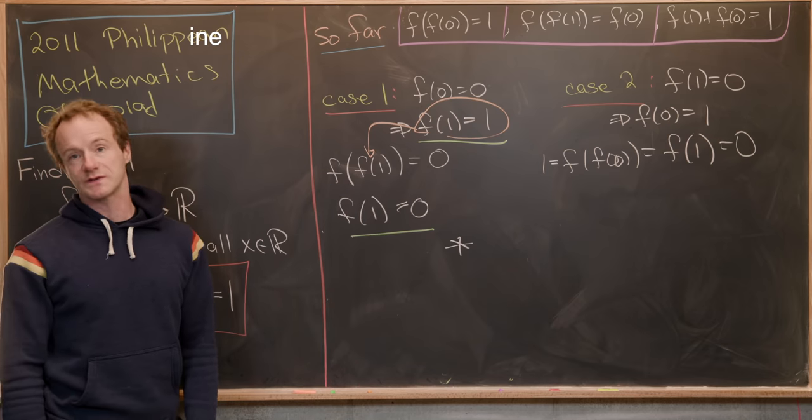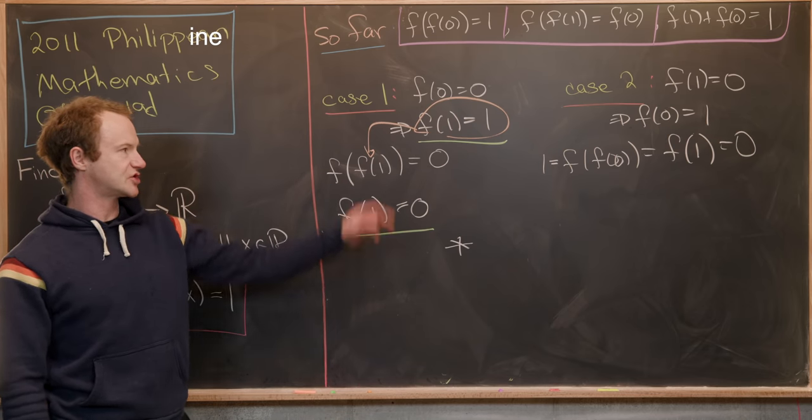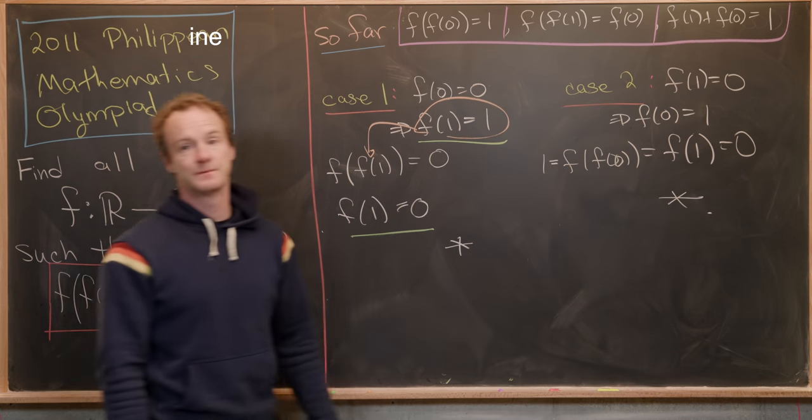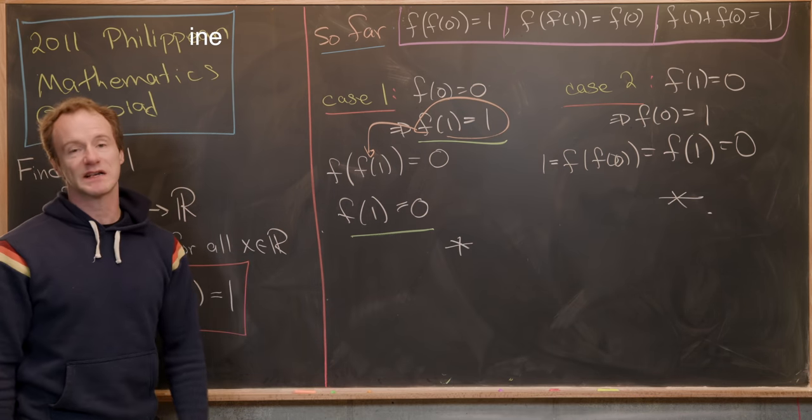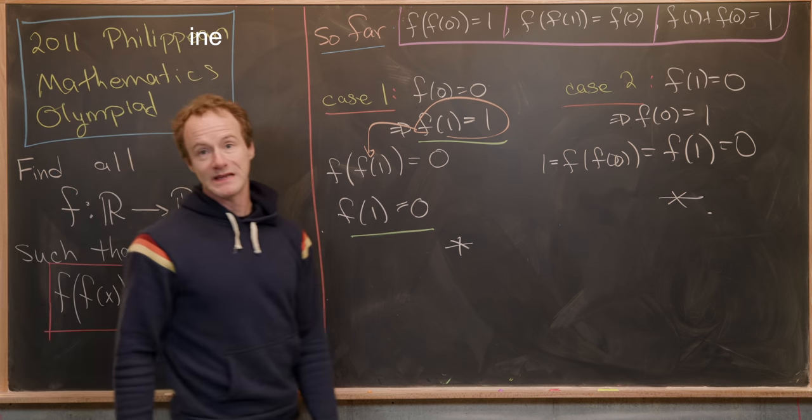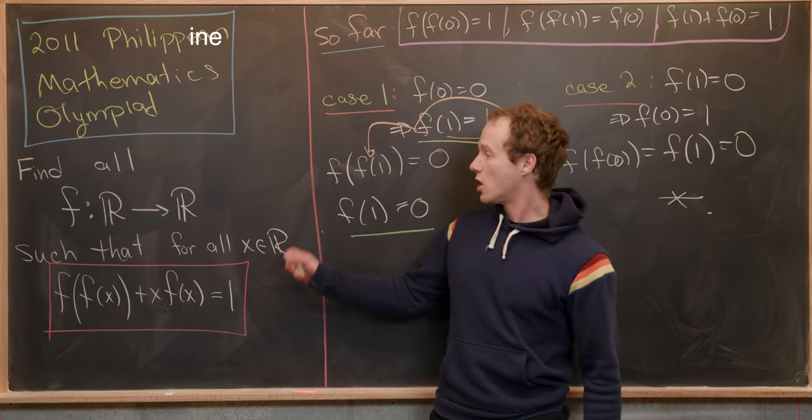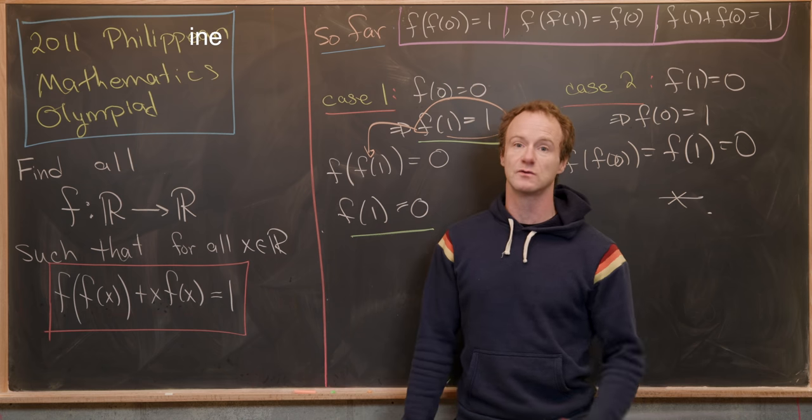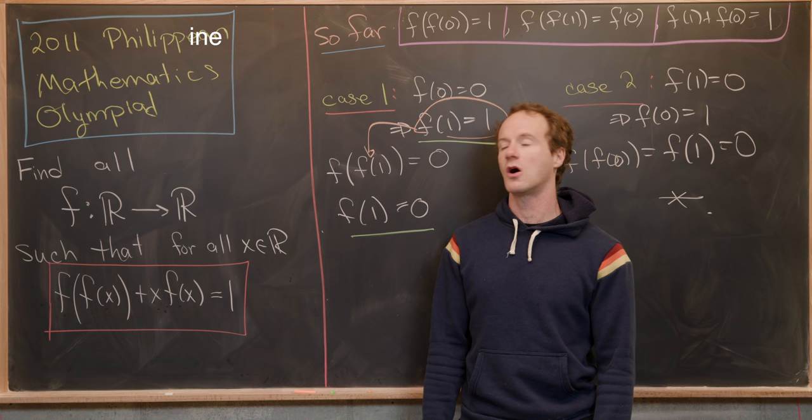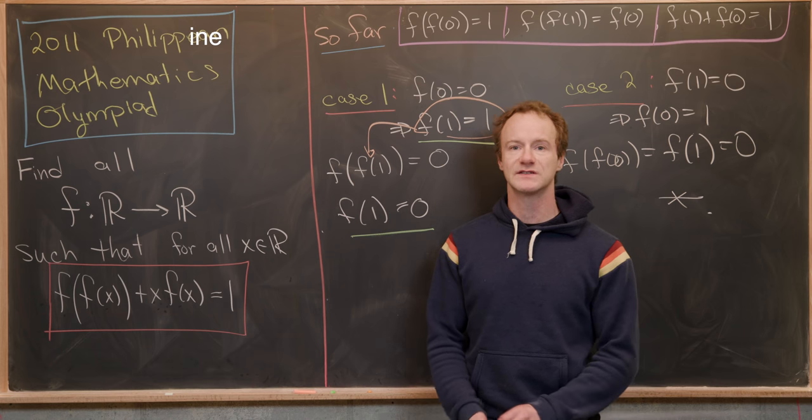So again, we get 1 = 0, a similar contradiction to what we got right here. So in other words, we've got a contradiction. So the two only possible cases brought us to a contradiction, which means finding all functions satisfying this rule is impossible. Well, we did find all of the functions. It's just that there are no functions. And that's a good place to stop.